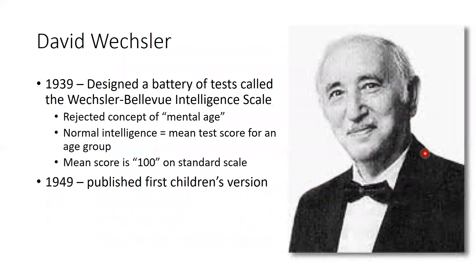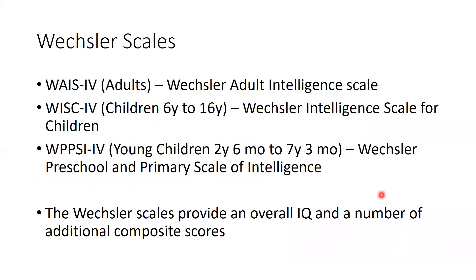Now the Wechsler scale. The Stanford-Binet is popular, but in 1939 Wechsler first developed the Wechsler-Bellevue Intelligence Scale while working at Bellevue Psychiatric Hospital in New York City. He didn't fully believe in the concept of mental age, though his approach is similar — he believed normal intelligence could be constructed as an average test score for a particular group, with an average score of 100 on a standard scale. In 1949, he published a children's version, which has gone through many revisions.